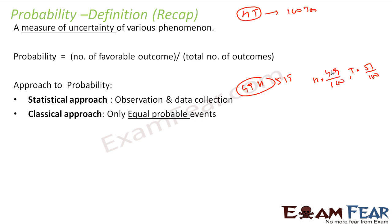We have a classical approach where we deal only with equal probable events. For example, you throw a coin and you get head and tail, both are equally probable. In such scenarios we use a classical approach, but these two approaches don't fit for real life scenarios where we have non-equal probable events also, and thus we have axiomatic approach.